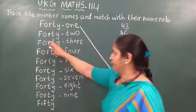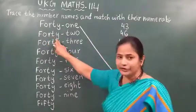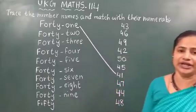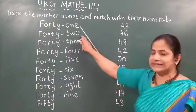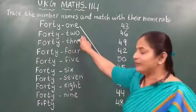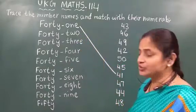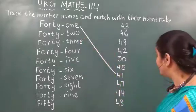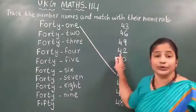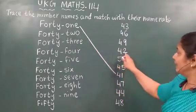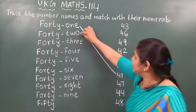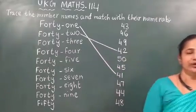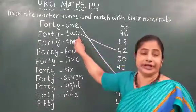Now the second one: F-O-R-T-Y T-W-O, 42. This is a number name. Now you have to find out the numerals of 42. 42 is already here — now you can match the number name 42 with the numerals of 42.